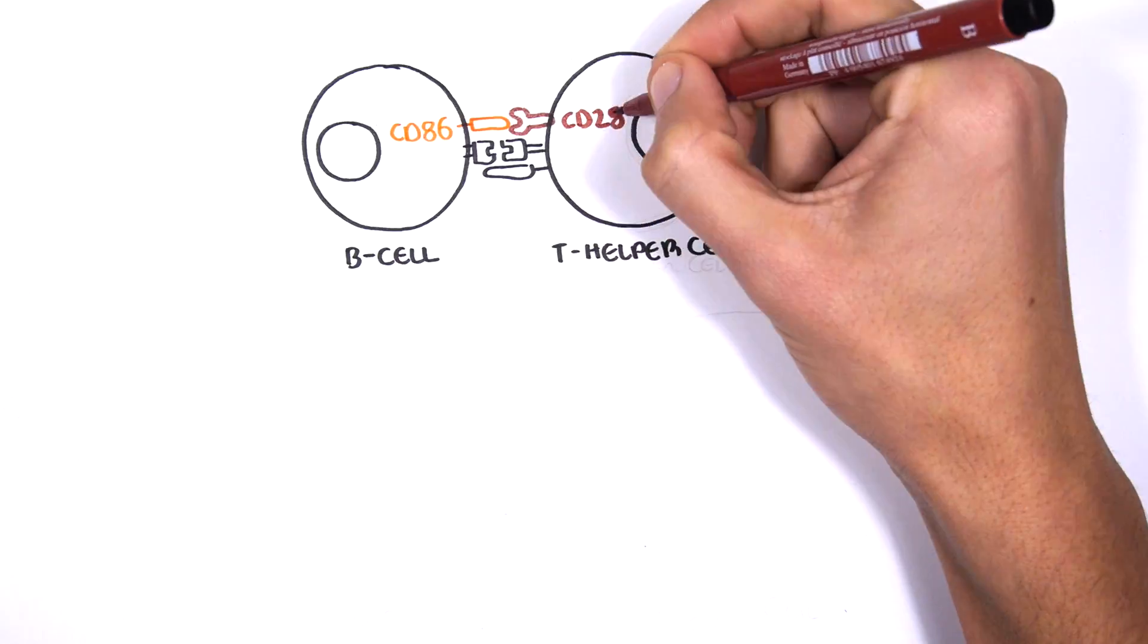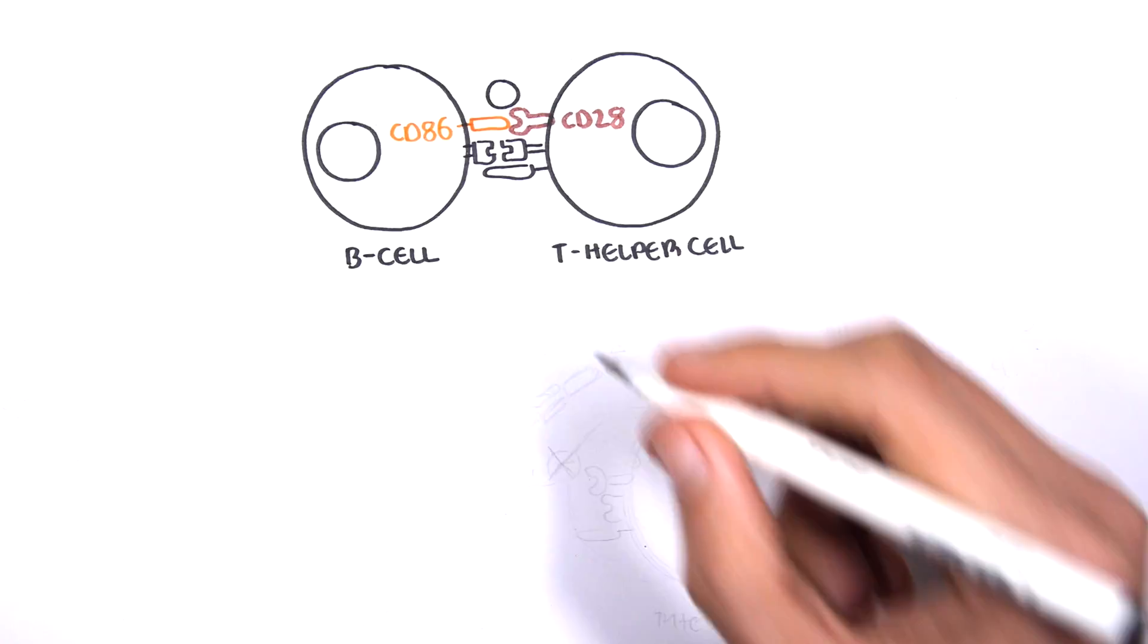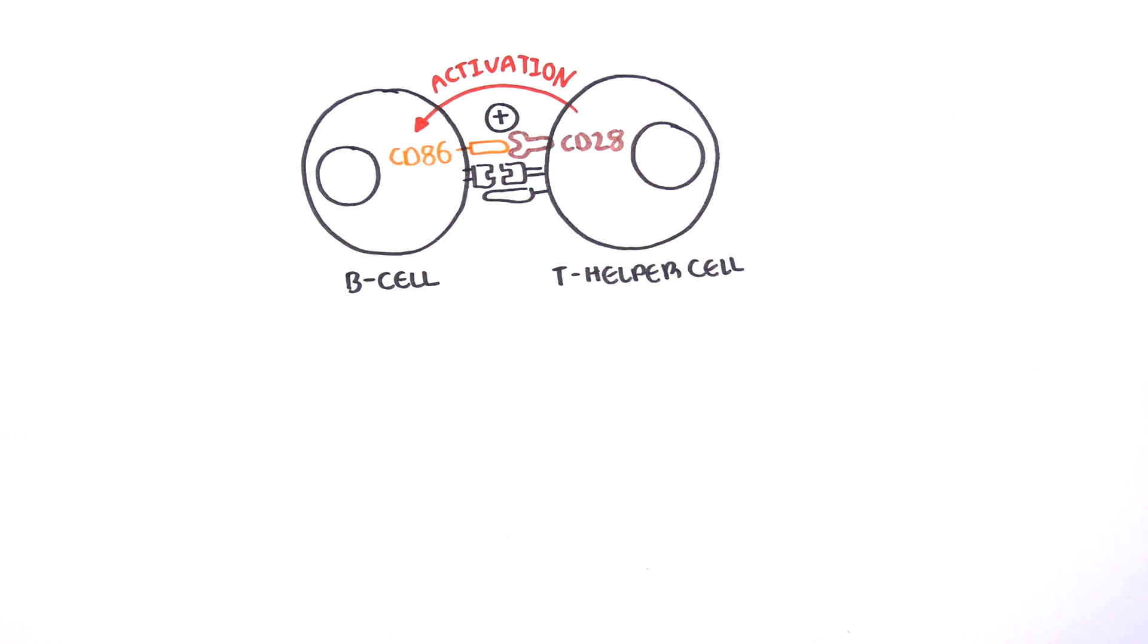CD86 needs to bind to another protein called CD28, which is found on the surface of these T helper cells. The binding of CD86 and CD28 will signal the T helper cell to activate the B cell.